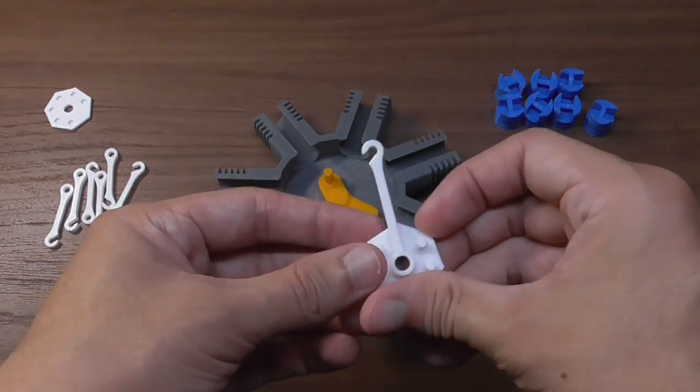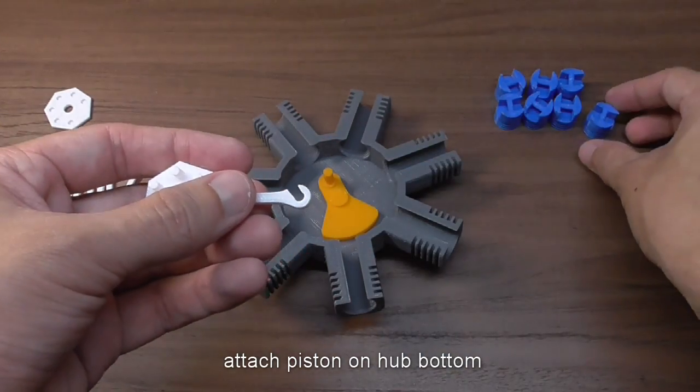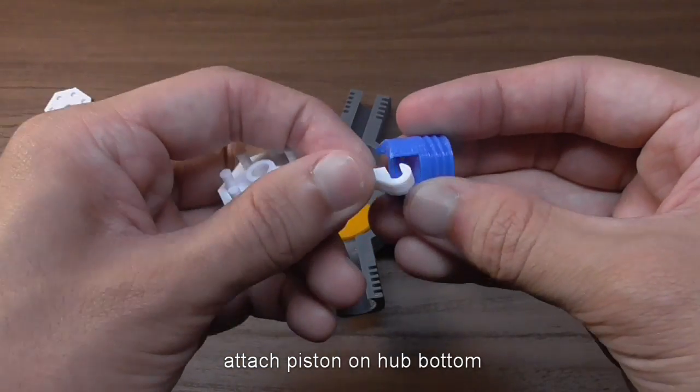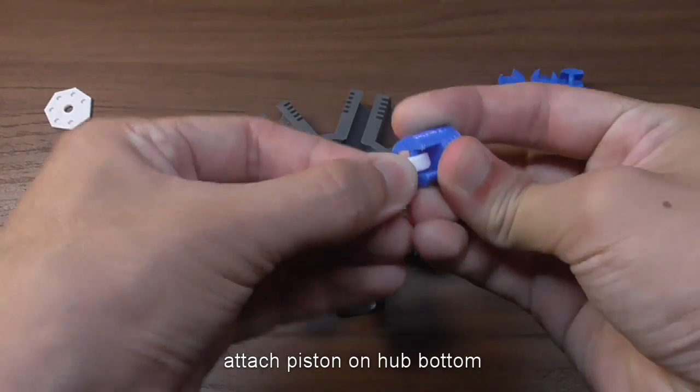Now take the hub bottom and attach one of the pistons. Make sure that the link is smooth.